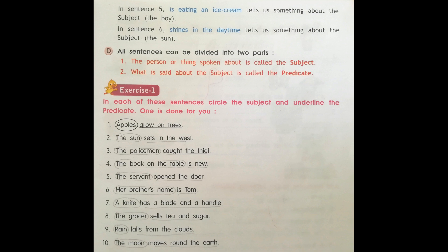One: Apples grow on trees. Which is the subject in this sentence? Apples. Grow on trees is the predicate.